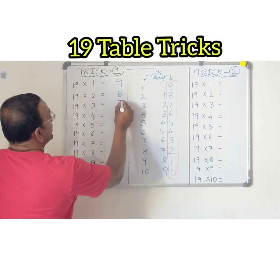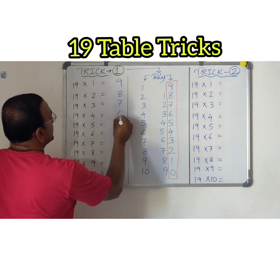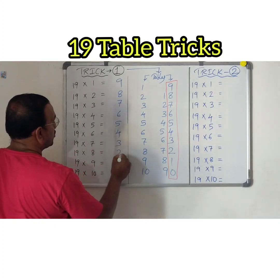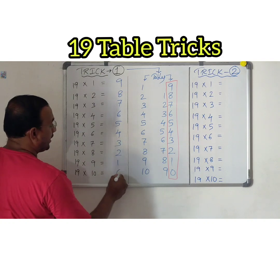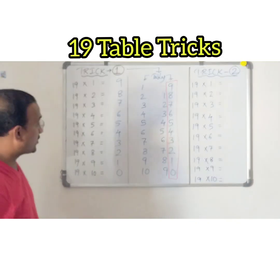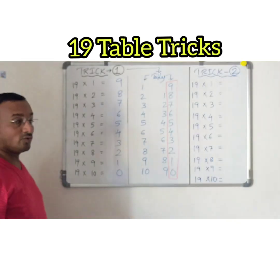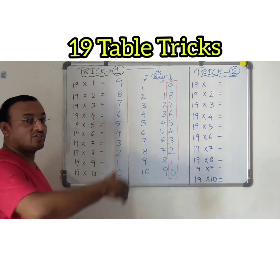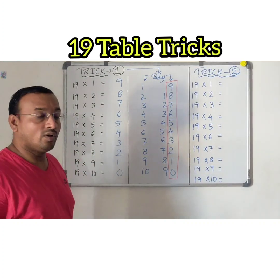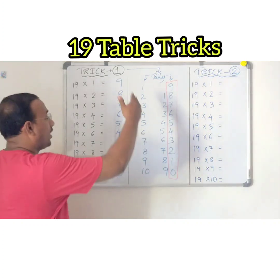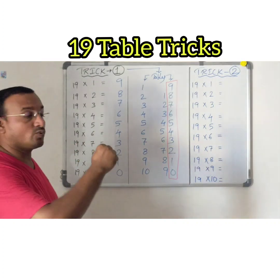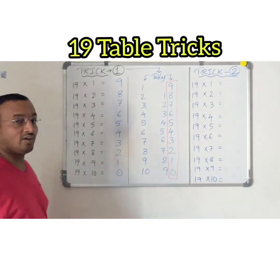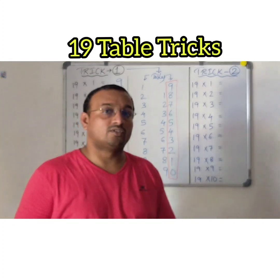So directly I take the units digits of the 9 table and place them as the units digits in the 19 table: 9, 8, 7, 6, 5, 4, 3, 2, 1, and 0. Next, I am left with the tens digits. I am going to add the tens digits of the 9 table and the digits of the 1 table, and put the result as the tens digits in my 19 table.